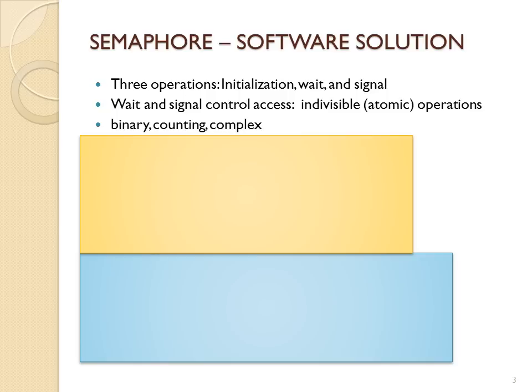Semaphores are a software solution that use atomic methods in order to control access to the critical section. An atomic method means that it is a set of instructions that are treated as if they're one instruction. There are three operations that semaphores do — it's a global variable and these operations are part of the code controlling the critical section of multiple processes. The three operations are: initialization, wait, and signal.